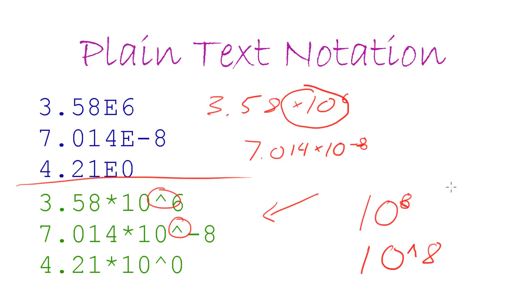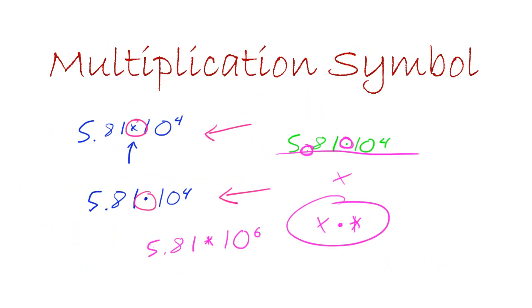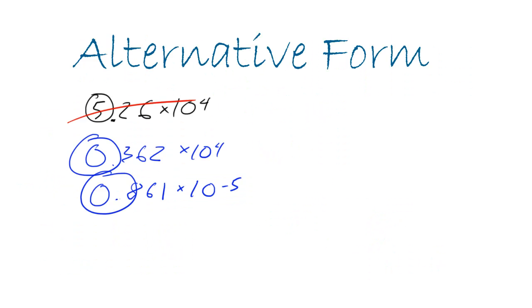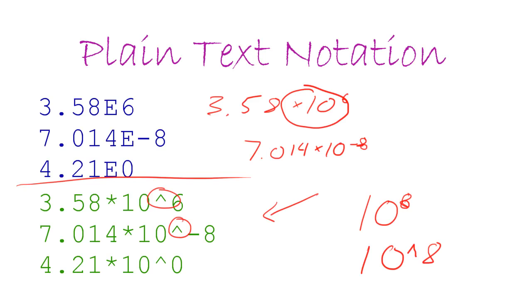Now that I went over all these alternative variations of scientific notation, no matter which one of these things you see, whether it's plain text notation, various multiplication symbols, or alternative form where you need the zero to the left of the decimal point, you guys should be able to understand what these numbers mean, how to use them, and how you can convert them to something that you feel more comfortable working with. So with that being said, thank you guys for watching. Don't forget to subscribe, and I will see you guys in the next tutorial.